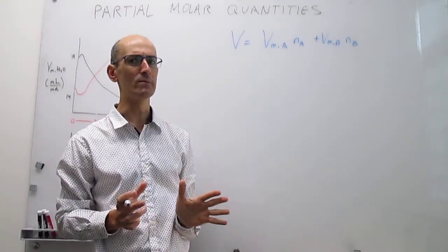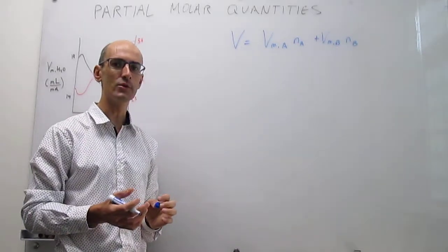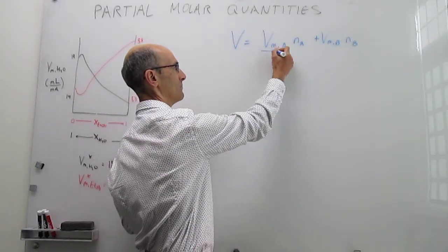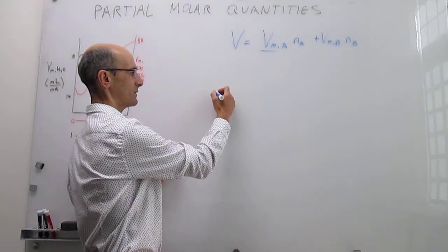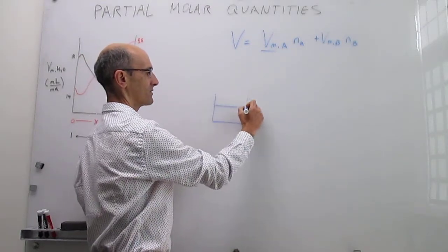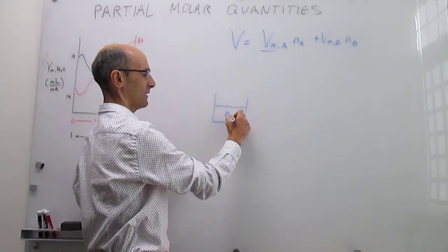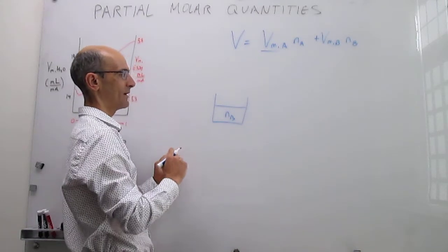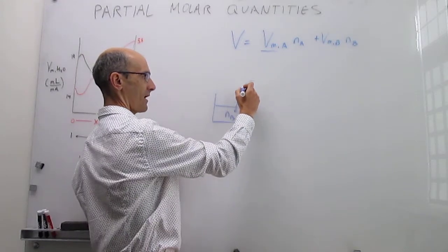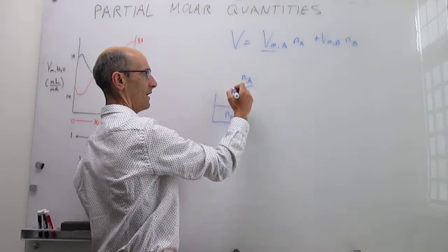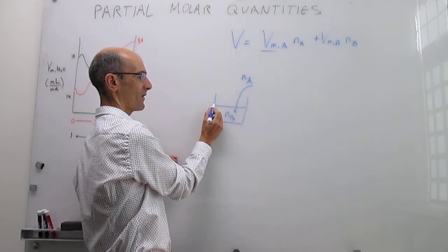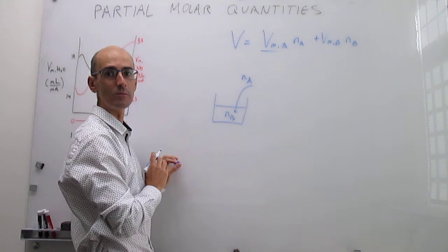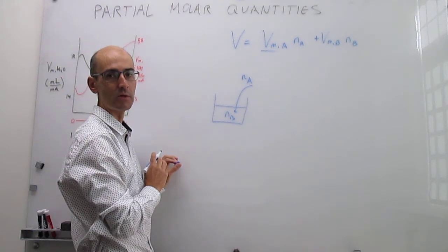The nuance comes from these partial molar quantities. The question is: how do we determine them? To determine the partial molar volume of A, you would start with some moles of pure B, then add some moles of A, and simply observe how the total volume of the mixture increases upon the addition of A. From that increase in total volume, you can determine the partial molar volume of A.